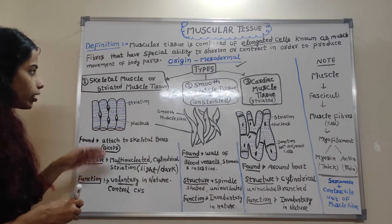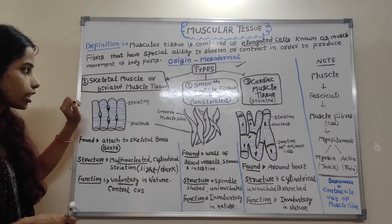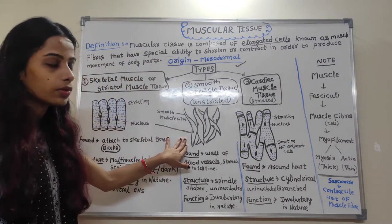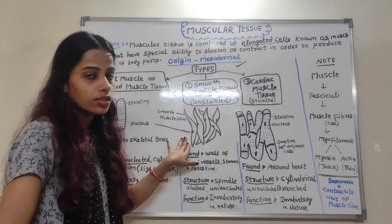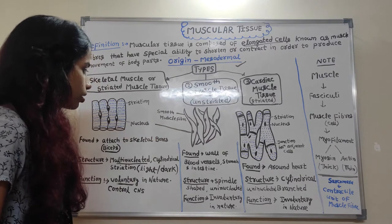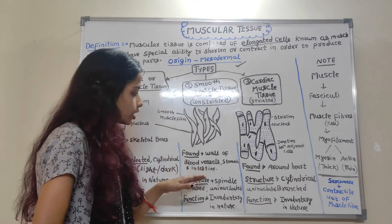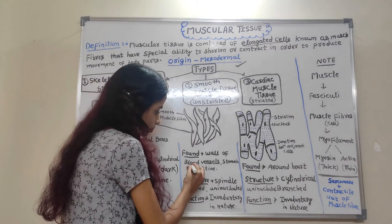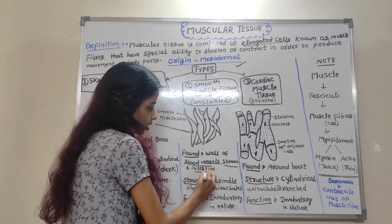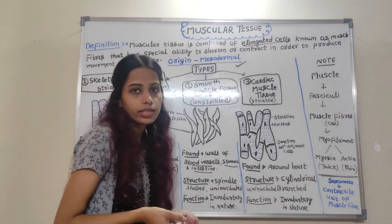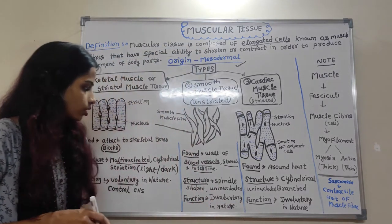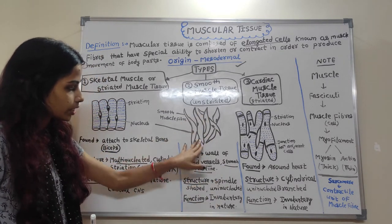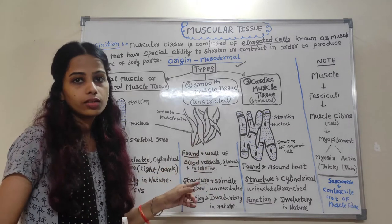The second type is smooth muscle tissue. You can see the structure — there is no striation present, so it is unstriated. Smooth muscle is formed in the wall of all internal organs like blood vessels, stomach, and intestine. The structure is spindle-shaped and uninucleated, meaning only one nucleus is present in each cell.